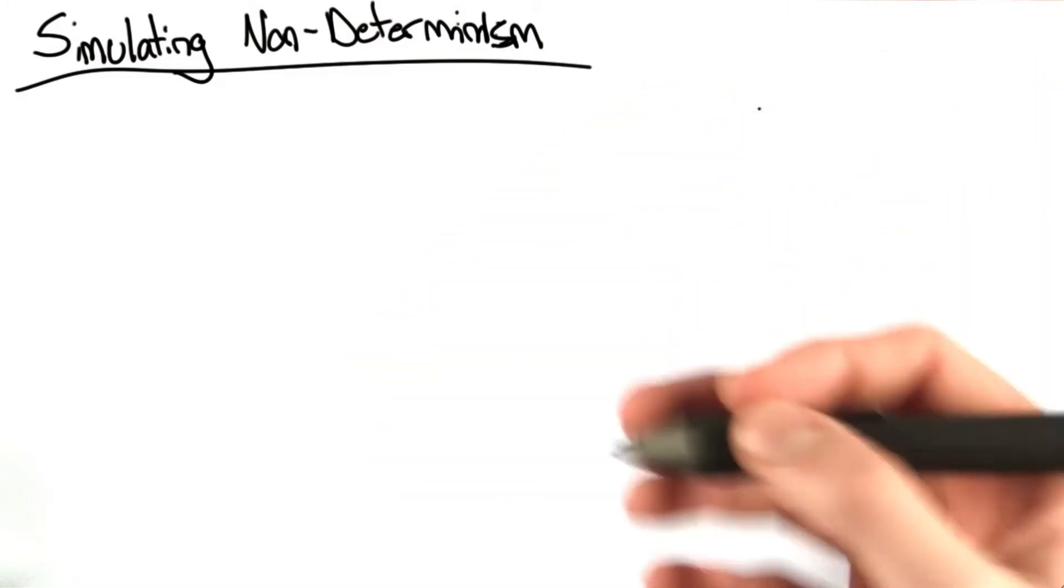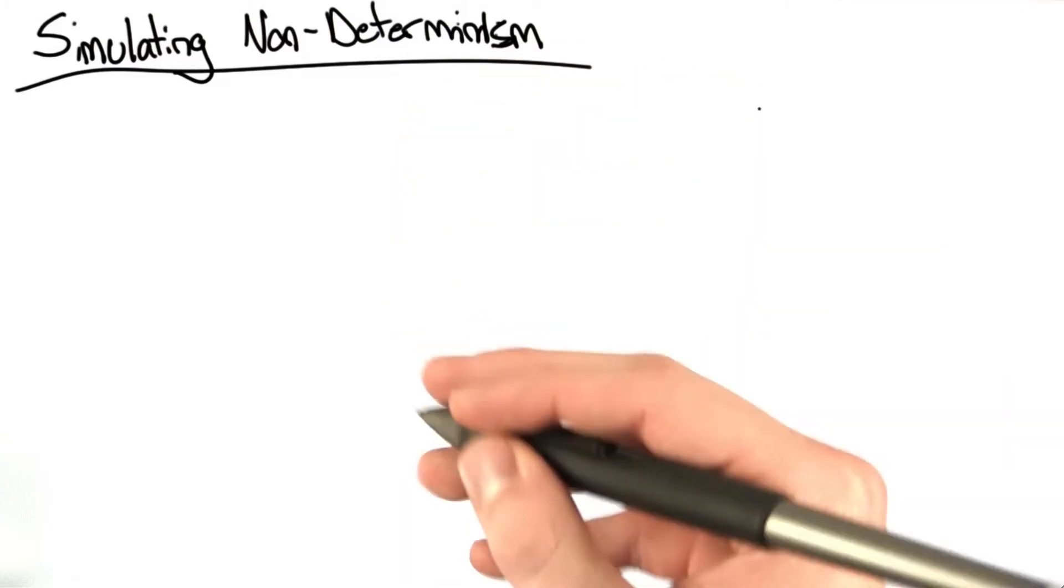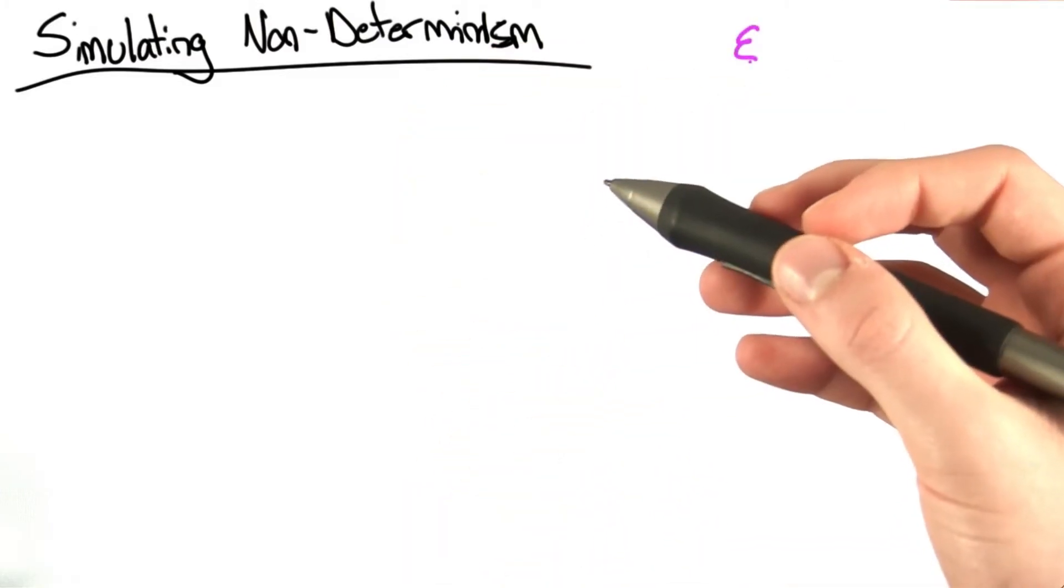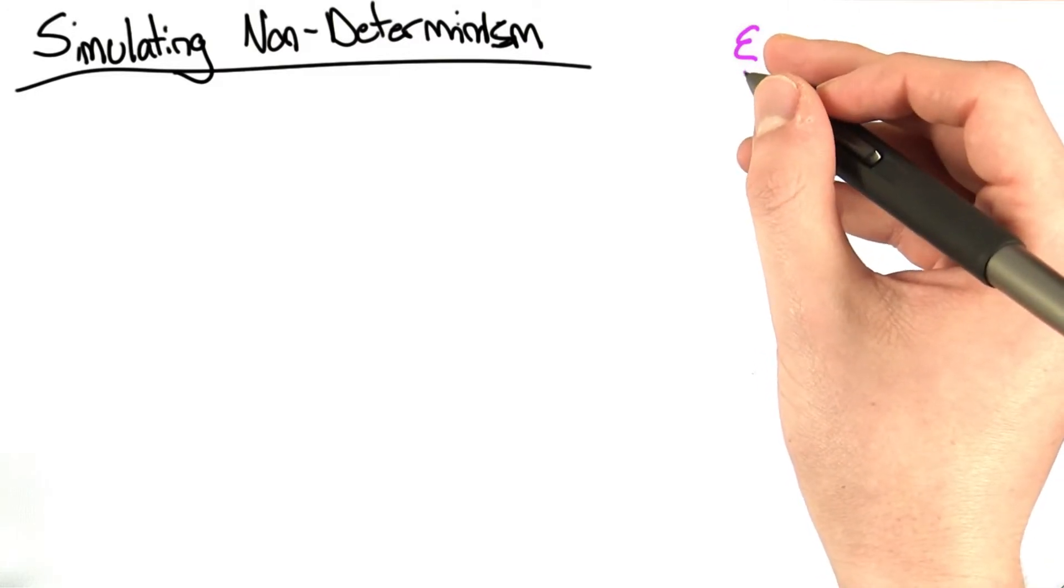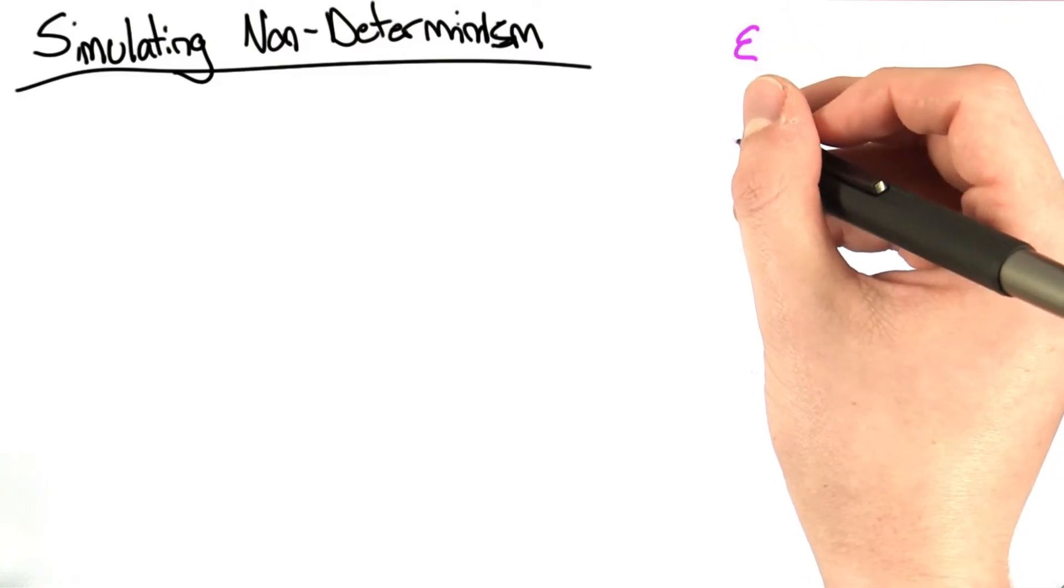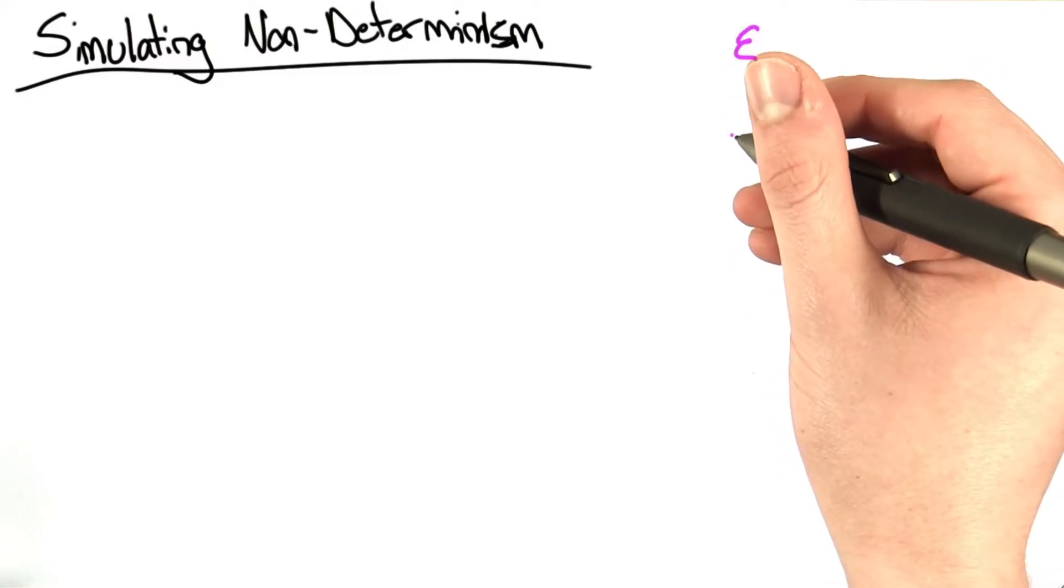As a quick review, what makes a non-deterministic finite state machine different than a deterministic one? One thing is that a non-deterministic state machine may have epsilon transitions, which means transitions that don't require any characters in the string and are taken automatically.